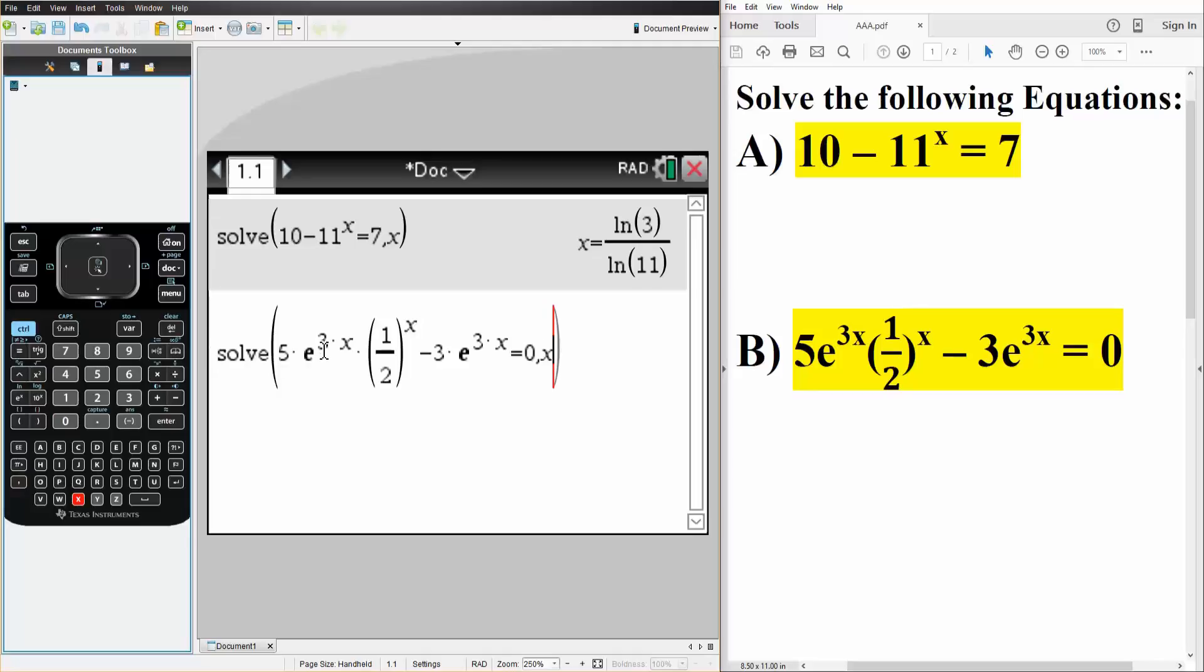so we have 5 times e raised to 3x times 1 half raised to x, minus 3 times e raised to 3x, is equal to 0, comma x,